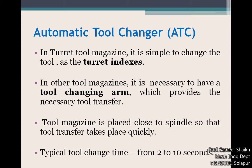Basically, the ATC is a systematic way of changing the tool from the spindle to the tool magazine. Now in turret type of tool magazine, it is very simple to change the tool as the turret indexes itself. The turret type of tool magazine will not only store the tools but itself indexes so that tool change occurs. Generally, a Geneva mechanism is used for indexing the turret in CNC machines, so we don't require an ATC in such cases.